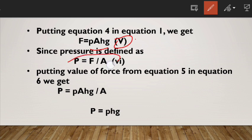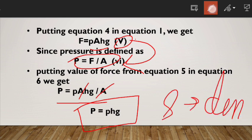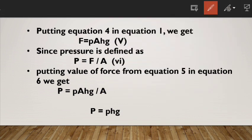Putting the value of force from equation 5 into equation 6, we get P equals ρAhg divided by A. The A cancels, so P equals ρgh. Here ρ is the density of the fluid.